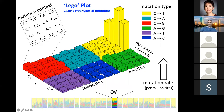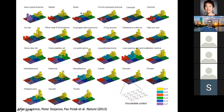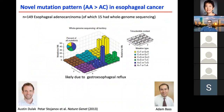There are 96 different types of mutations: six different substitutions times four preceding bases times four following bases. When we look across cancer, we see different 'Lego plots,' as we call them. In lung cancer, cervical cancer, and bladder cancer, you can identify these spikes that are not noise and not caused by cigarette smoke or the UV seen in melanoma — we didn't know what caused them at first.